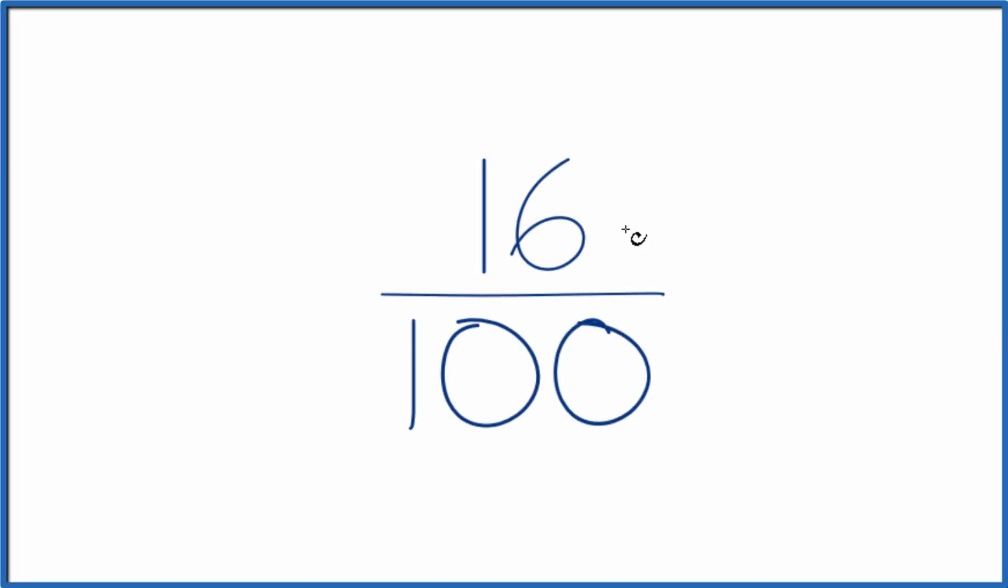If you need to simplify the fraction 16 one-hundredths, here's how you do it. What we're trying to do is find another fraction that's equivalent to 16 divided by 100. It has the same decimal value as 16 divided by 100, it's just simplified in lowest terms.